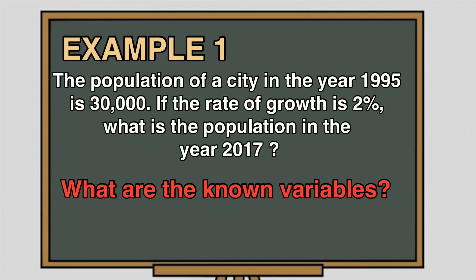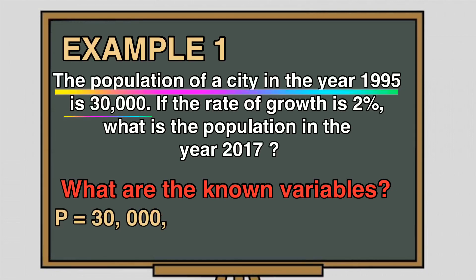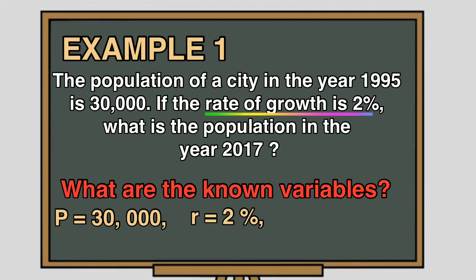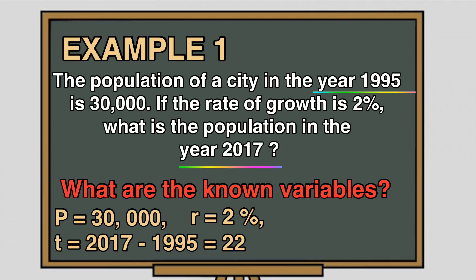Next, identify the given values which we can use to answer the problem. P is equal to 30,000, which is the population in the year 1995 or the population at present. R is equal to 2%, which is the growth rate, and T is the time period from year 1995 to 2017. T is equal to the difference of 2017 and 1995, that is equal to 22 years.